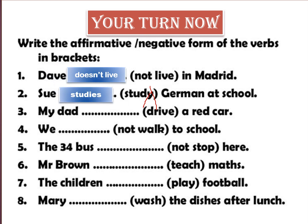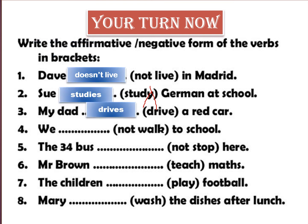Number three: My dad (drive) a red car. Dad likes S, so: My dad drives a red car. Number four: We (not) walk to school. 'Not' means negative. We hate S, so we use DON'T: We don't walk to school.